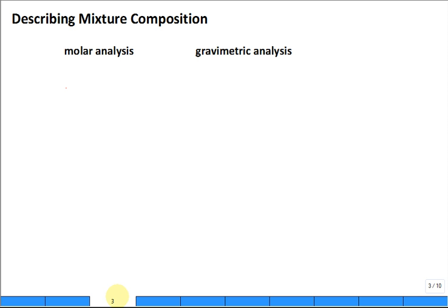We have molar analysis and gravimetric analysis. Gravimetric is the term for a mass basis. The best way to think about this is you need to go back and forth between molar number of moles and mass m. How do you do that? If you multiply by the capital M, the molar mass, you get this equation. That's how you jump back and forth, and you're very good at using the molar mass.